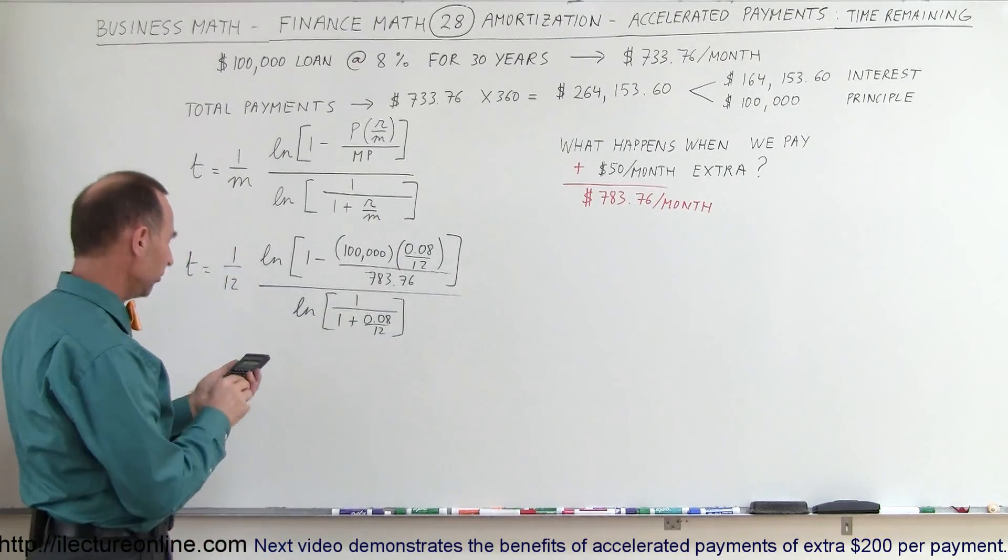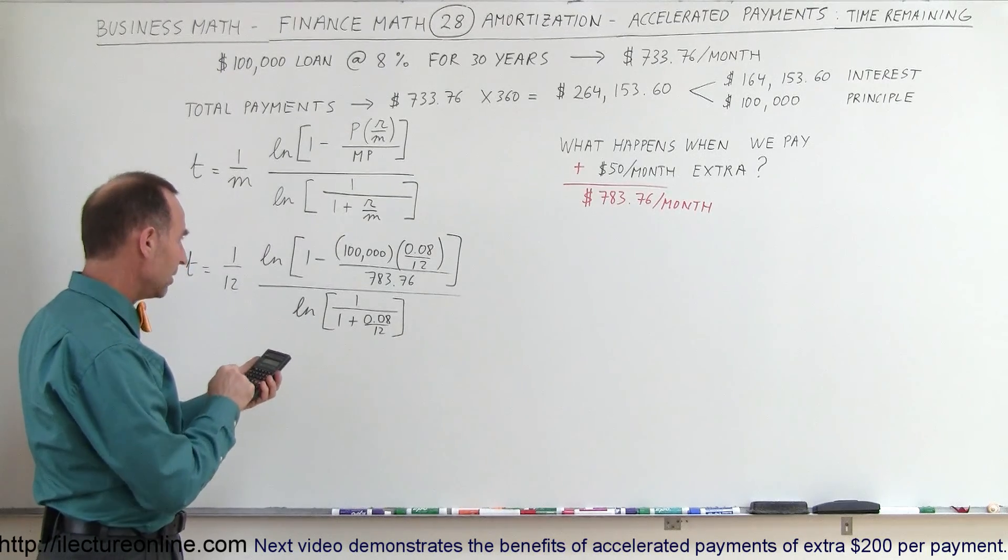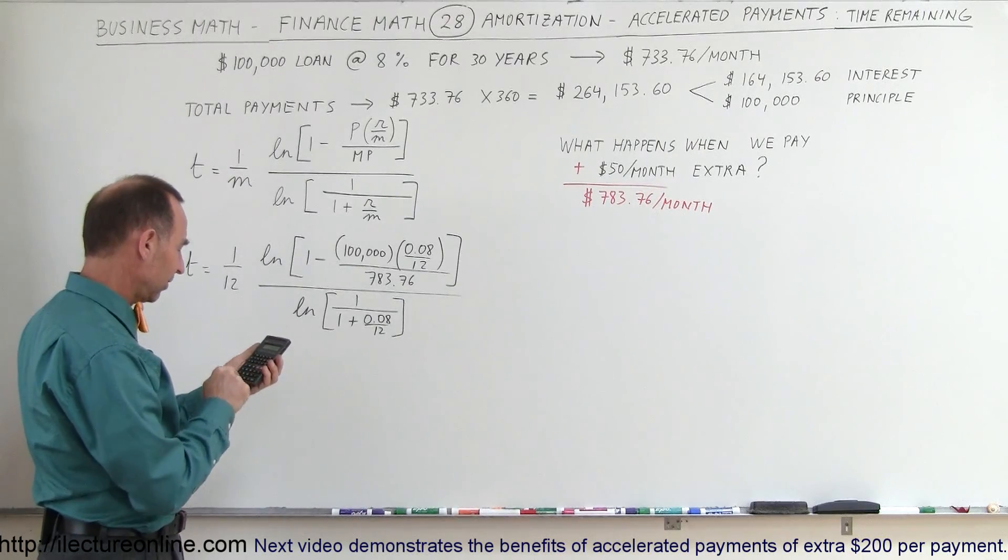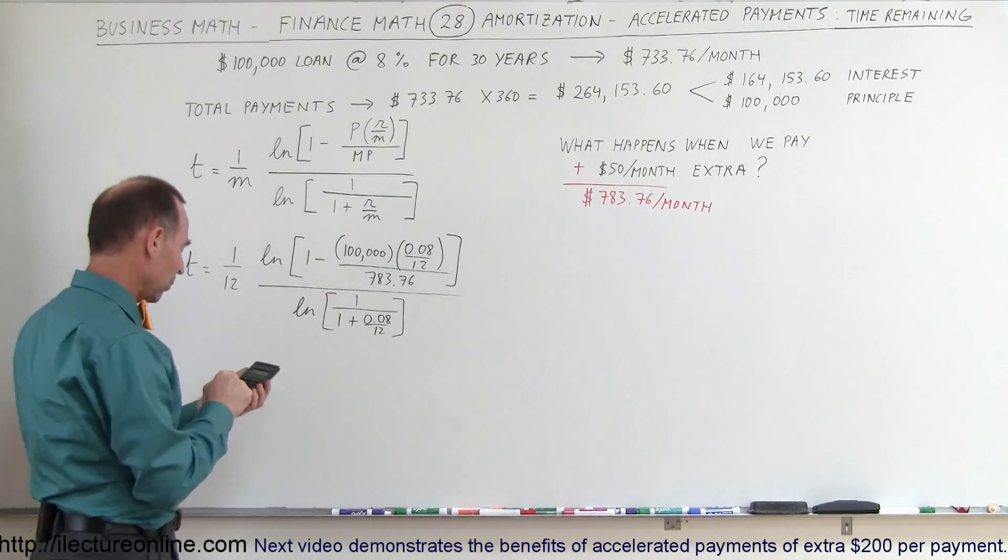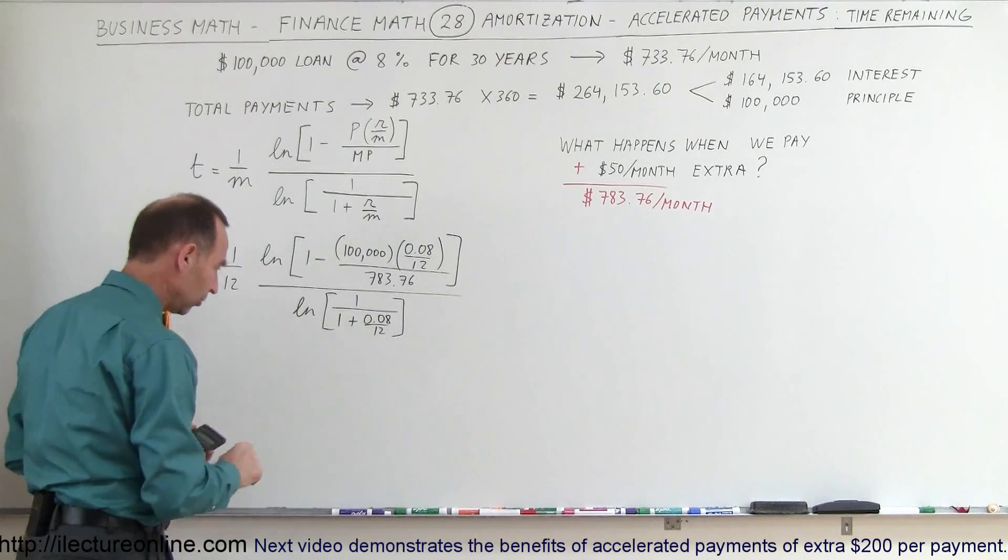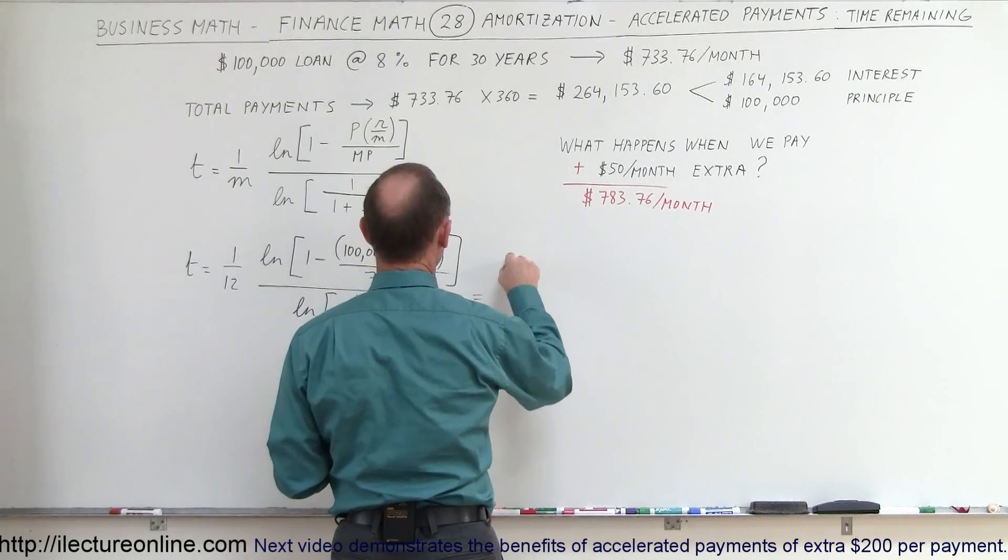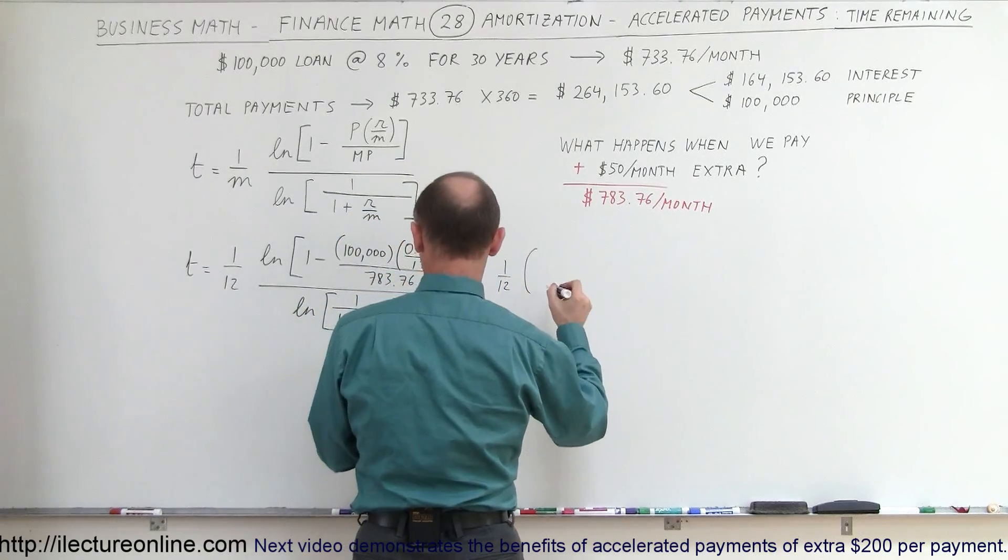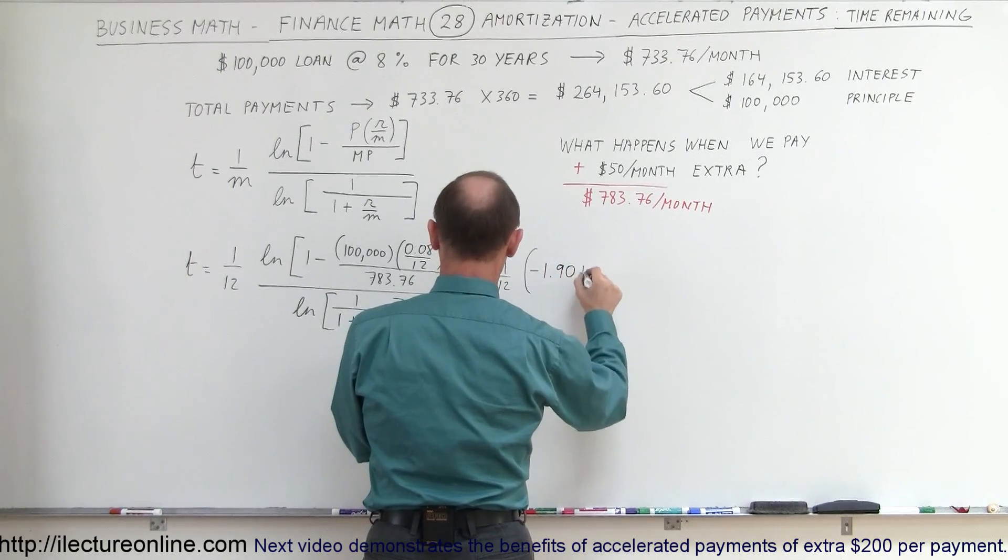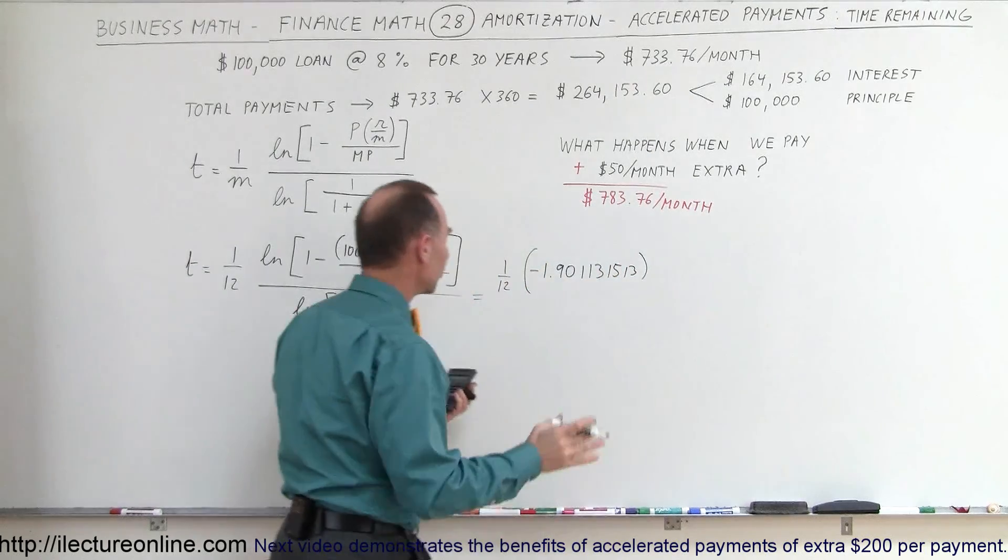So let's take the top one first. So we have 100,000 times 0.08 divided by 12 and divided by 783.76. Subtract that from 1. Take the natural log of that, and just so you can follow, if you try this, at this point, this should be equal to 1 divided by 12 times, in the numerator, you should get minus 1.901131513. Of course, we don't need all those numbers there, but just so you can follow.